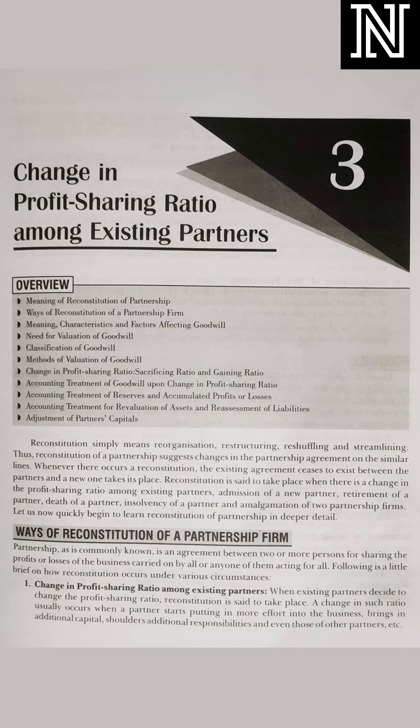So if any of these situations arise, the profit sharing ratio will change — that is the reconstitution of a partnership. Give an example of reconstitution: first, change in profit sharing ratio, which we have started. Second, admission of a partner. Third, retirement and death of a partner. Or due to the insolvency of a partner.